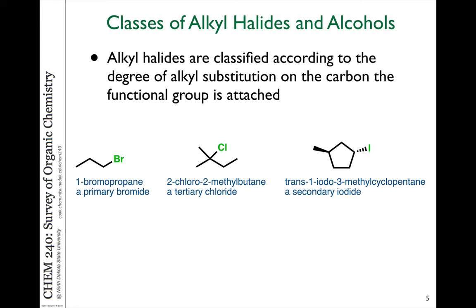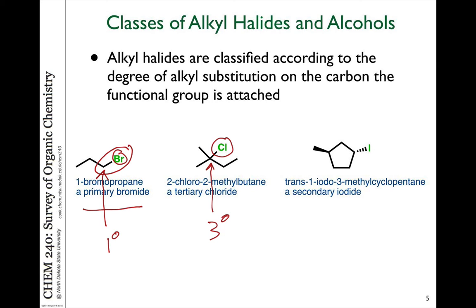When we talk about reactions of alkyl halides, we often refer to the degree of alkyl substitution that the halogen is attached to, because that impacts reactivity. For example, if a bromine is on the end of a chain, such as in 1-bromopropane, we refer to this as a primary bromide — the bromine is attached to a carbon with one degree of alkyl substitution. A tertiary chloride is attached to a carbon with three other carbons. A secondary halogen compound would be, for example, a secondary iodide in a cyclopentane molecule.